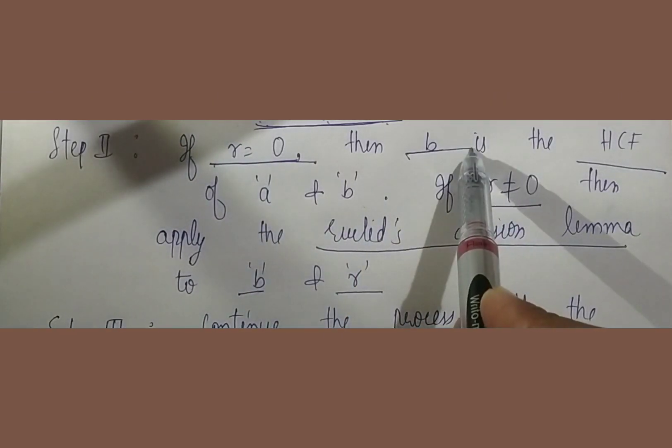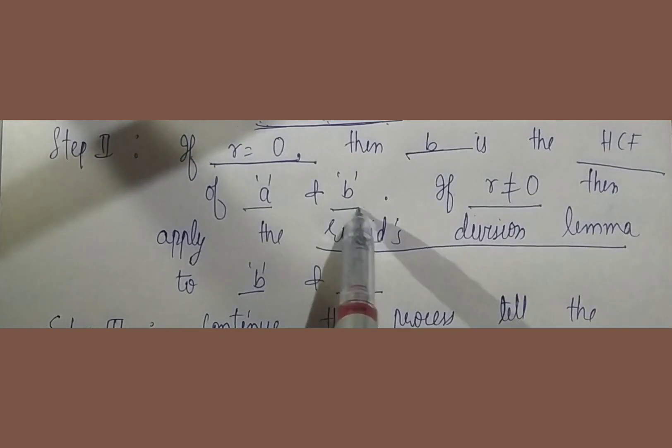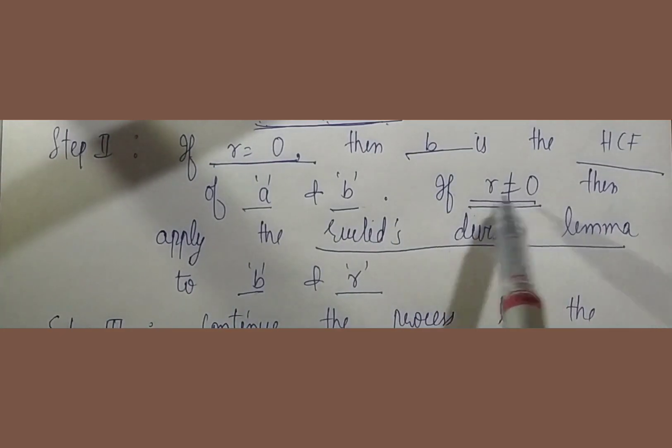If we find the remainder 0, then b is the highest common factor, a or b, but if our remainder is not equal to 0, then we apply the Euclid's Division Lemma to b and r.